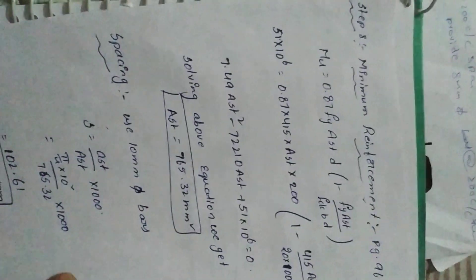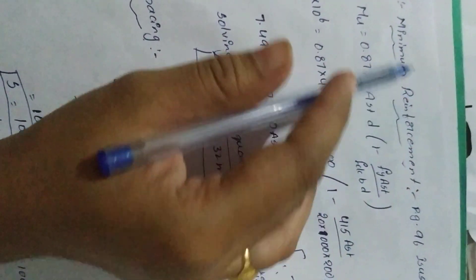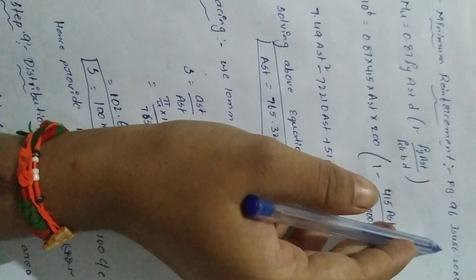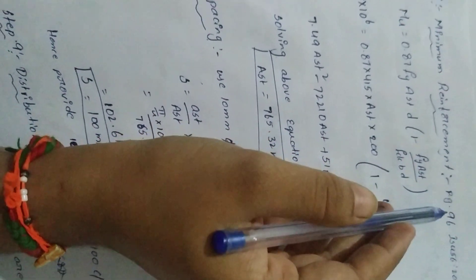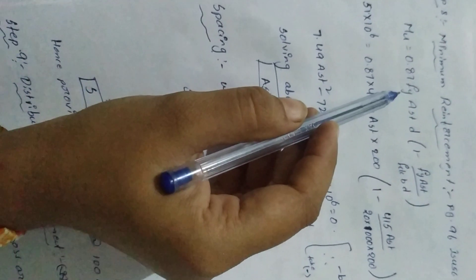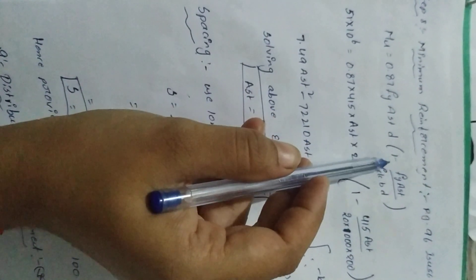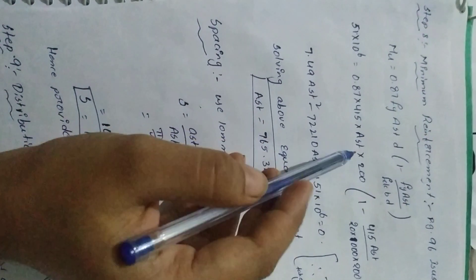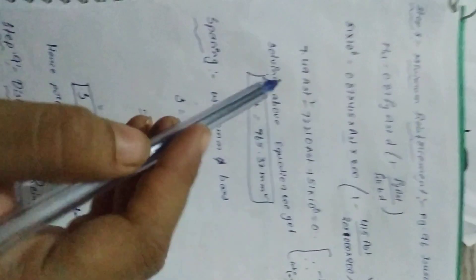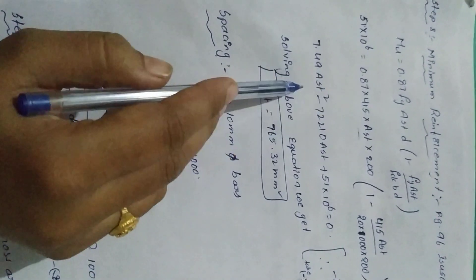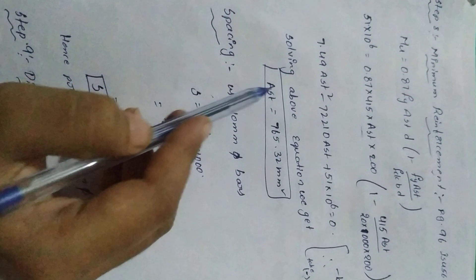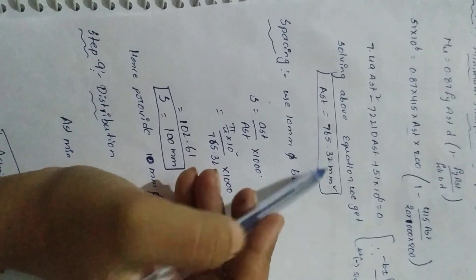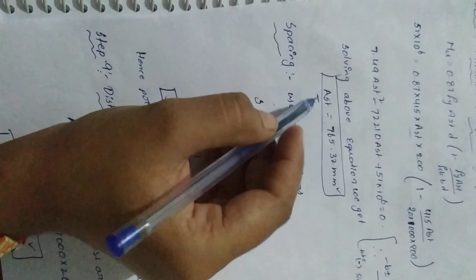Step 8: Minimum reinforcement. From IS 456:2000 page 96, using the formula M_u = 0.87 × fy × Ast × d × (1 − fy·Ast / fck·bd). All values are known except Ast. Solving this equation gives the minimum main reinforcement Ast = 65.32 mm².